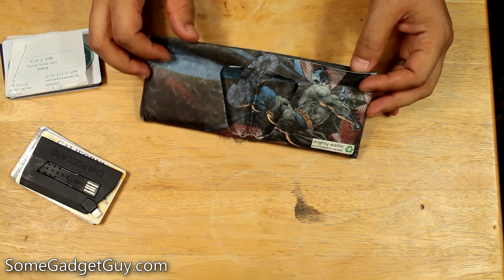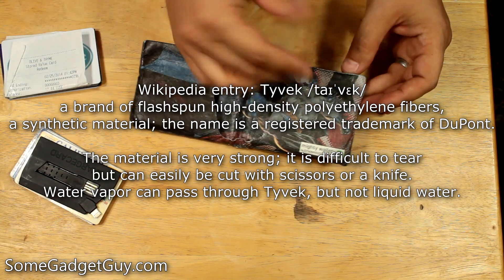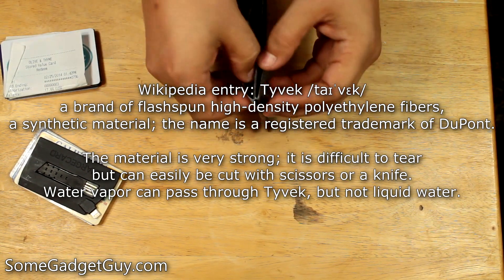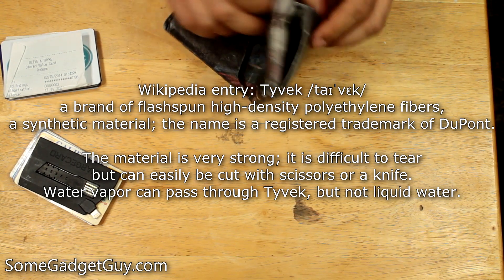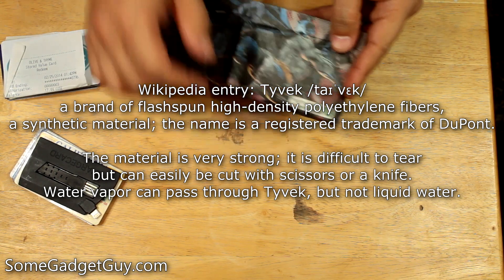And so I was not expecting this wallet to hold up. It's made out of a papery material. They call it Tyvex. But it comes apart and it pulls out so that you can make things a little bit thicker, a little bit fatter. It's completely recyclable too, which I think is pretty sweet.